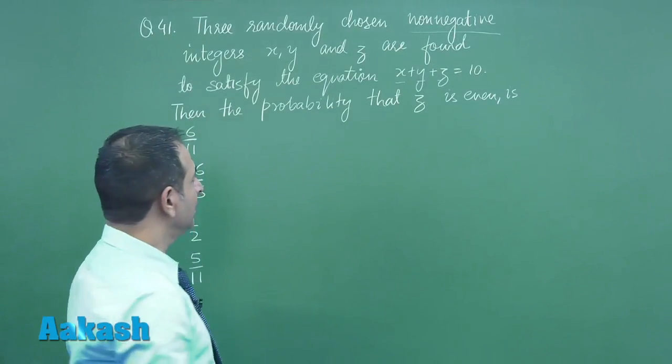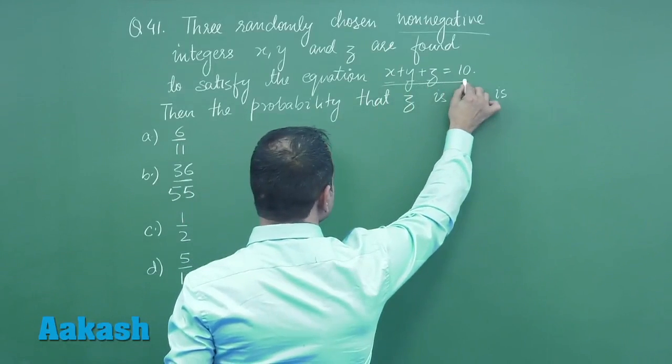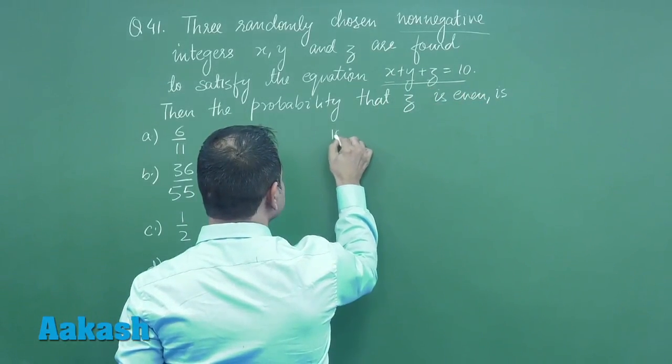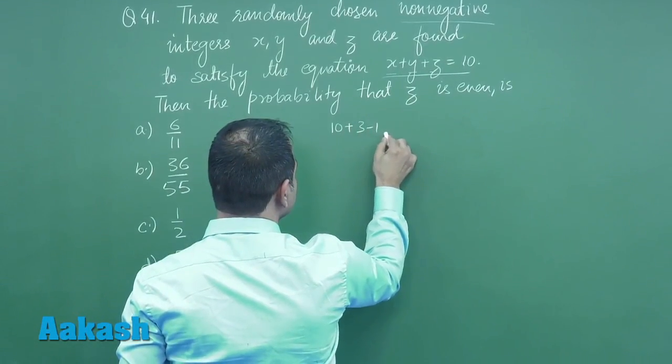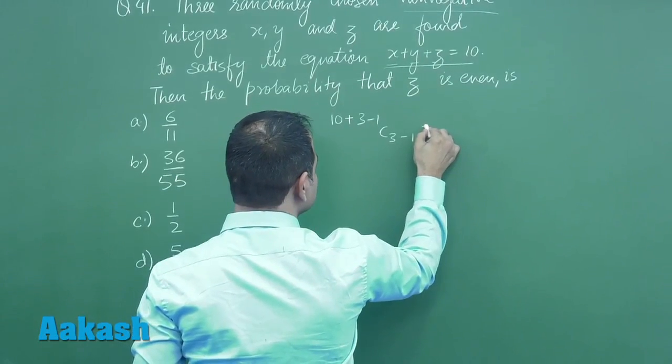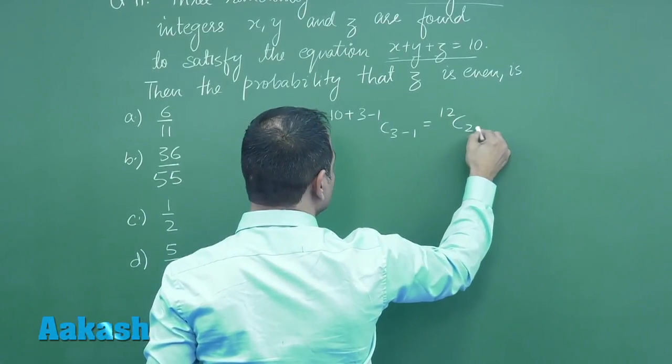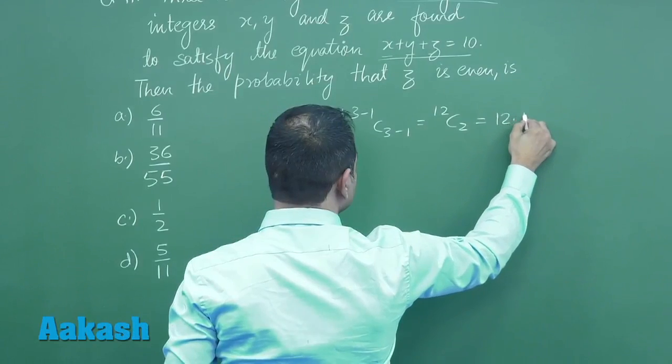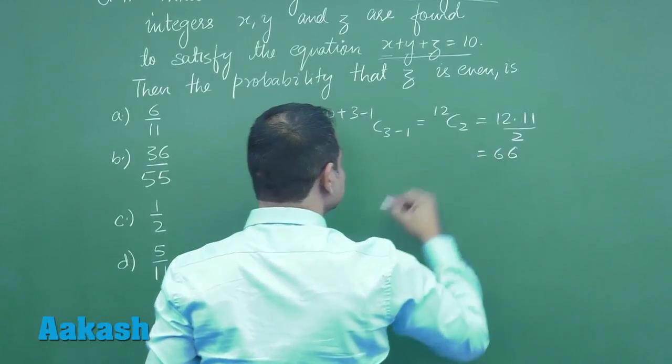Total cases will be: the number of total solutions of this equation is 10 plus 3 minus 1 C 3 minus 1, that is 12 C 2, which is 12 into 11 by 2, that means 66.